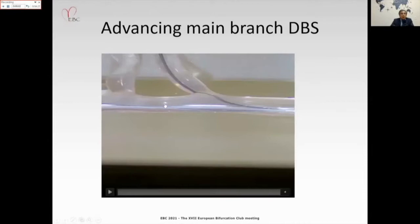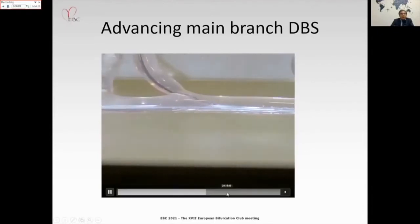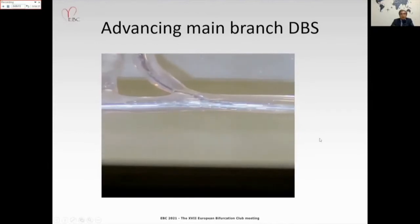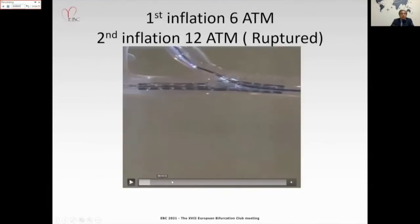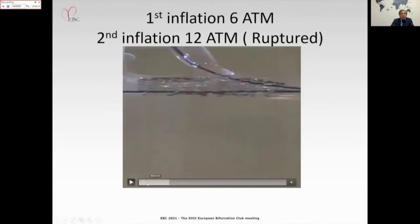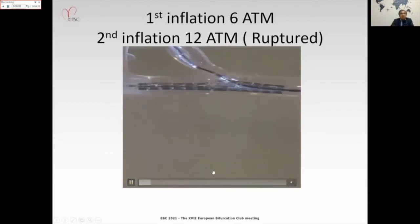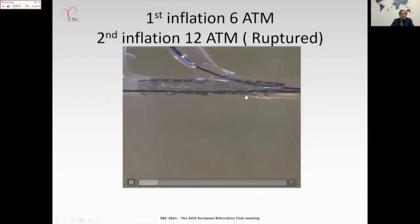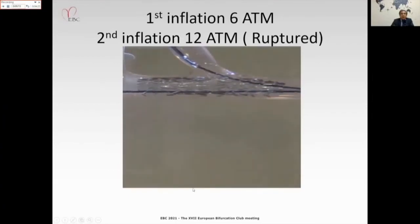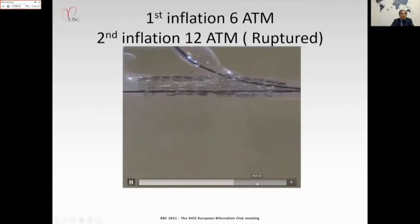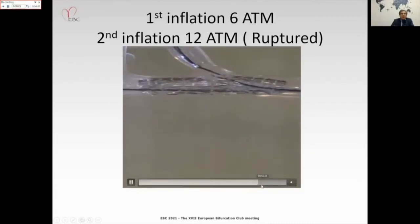A bifurcation silicon model was used with two-wire technique. A bifurcation balloon with a stent was advanced to the main branch. Inflating first at 6 atmospheres opened the stent in the main branch, but there was not good opening in the proximal part. Re-inflating at 12 atmospheres also showed inadequate proximal opening. A high-pressure bifurcated balloon is needed, and we must understand that silicon has a high recoil. Before bringing the high-pressure balloon, I showed there was no jailing of flow to the side branch.